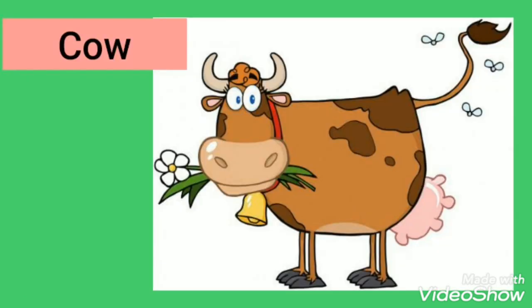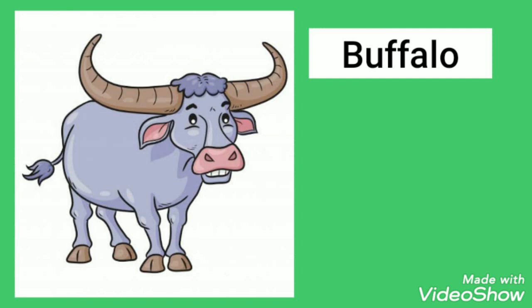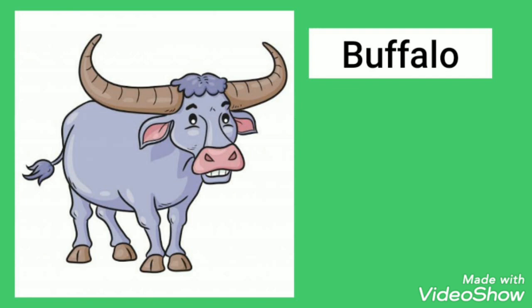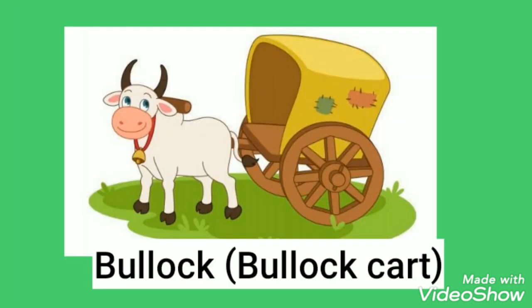Cow and buffalo give us milk. Bullocks help in plowing the field and are used for farming. Bullocks are also used in bullock carts to carry medium-sized loads of vegetables or fruits — for example, sugarcane or watermelon carrying bullock carts.